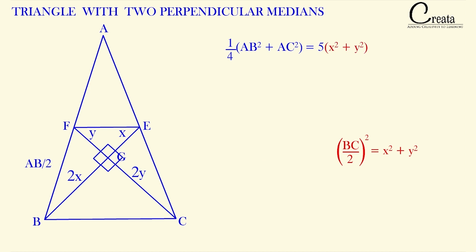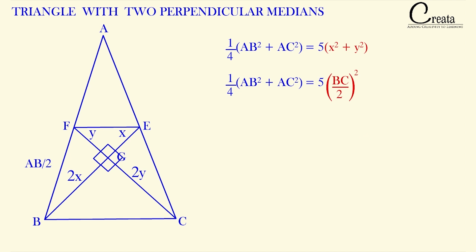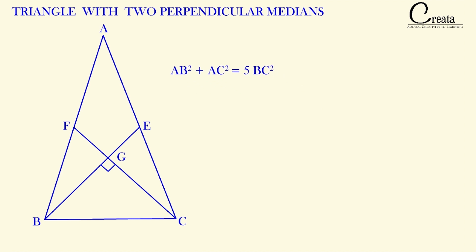Replacing X² + Y² with (BC/2)²: (1/4)(AB² + AC²) = 5·(BC/2)². On simplifying, we get AB² + AC² = 5BC². This is the important relation — applicable only when two medians of a triangle are perpendicular to each other. Questions based on this relation are commonly asked in competitive exams.